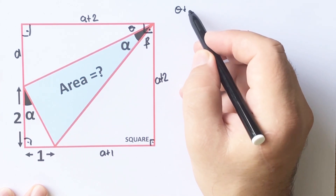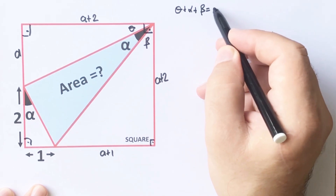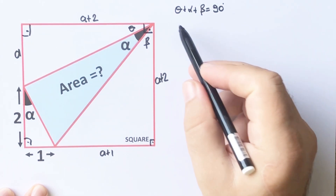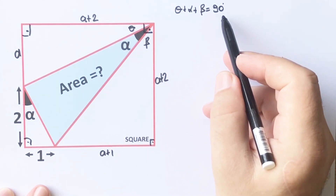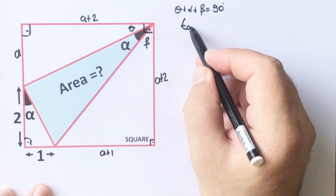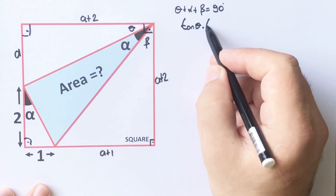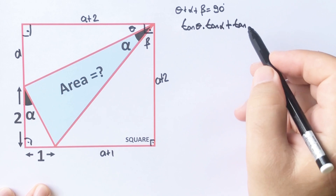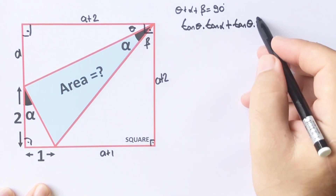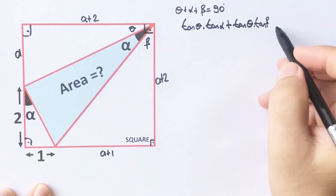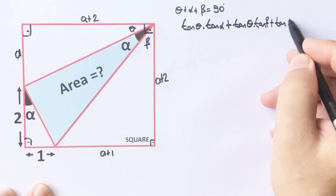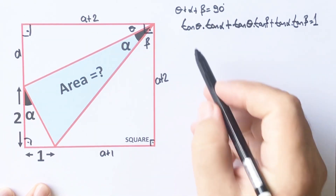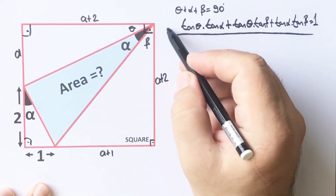The sum of these three angles equals 90 degrees. We know that if the sum of three angles is 90 degrees, then the sum of their pairwise tangent products equals one. So: tangent theta times tangent alpha, plus tangent theta times tangent beta, plus tangent alpha times tangent beta equals one. This formula is very important.